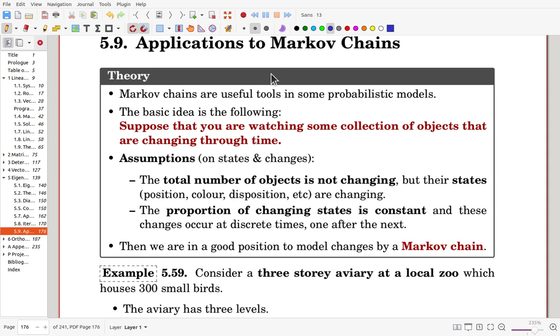The total number of objects is not changing, but their states are changing. The proportion of changing states is constant, and these changes occur at discrete times, one after the next. So the changing manner is the same through whole time. Then we are at a good position to model changes by a Markov chain.